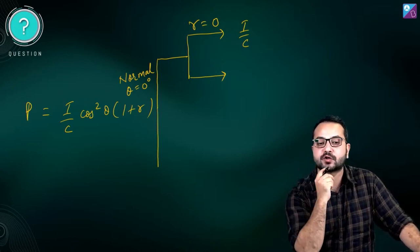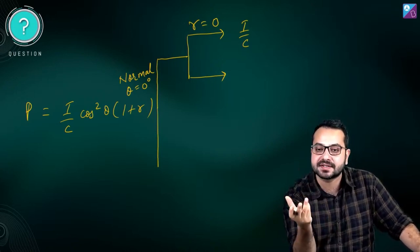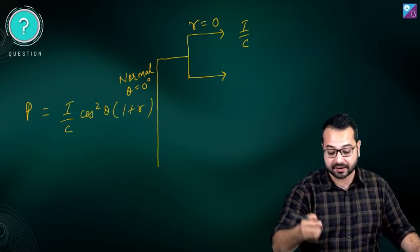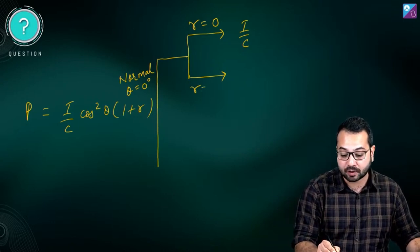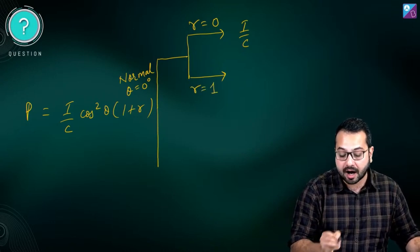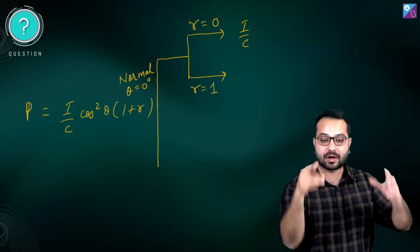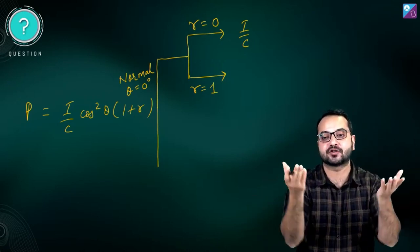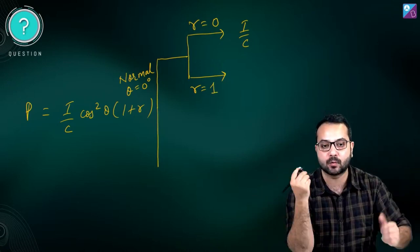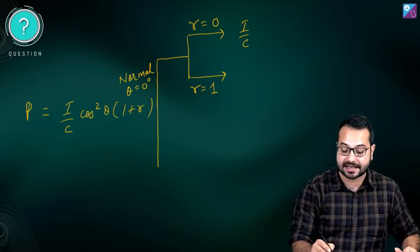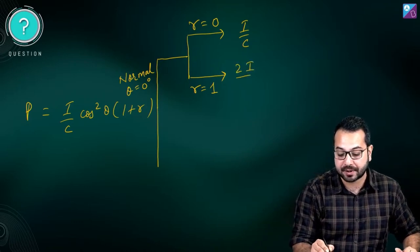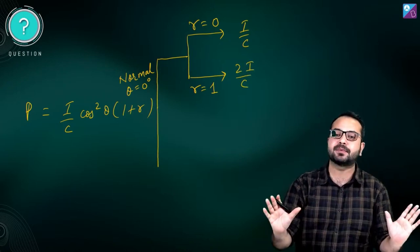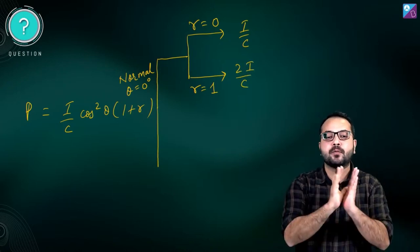For normal incidence and perfectly absorbing surface, radiation pressure = I/C. Now another special case: perfectly reflecting surface. In that case r equals one — all the light that falls gets reflected. So the radiation pressure becomes 2I/C. Plain and simple.